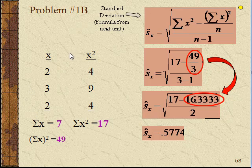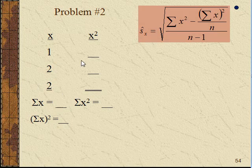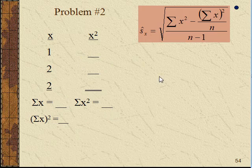Okay, so here's another problem. I want you to get the x squared values, get all these values, and then go ahead and work out the formula. Again, hit pause, and when you're ready to start again, click it.